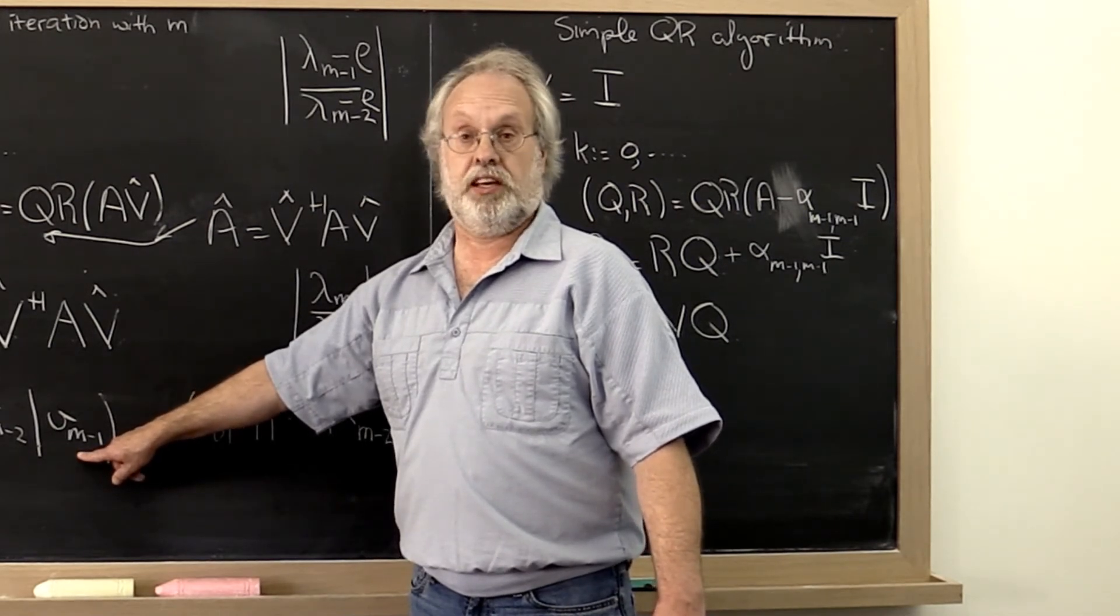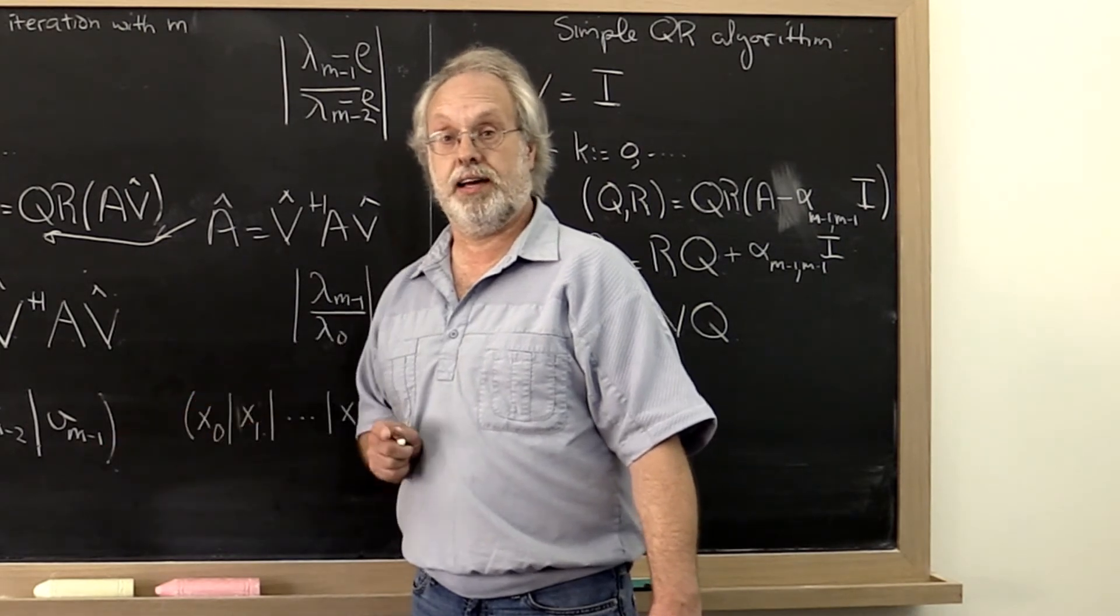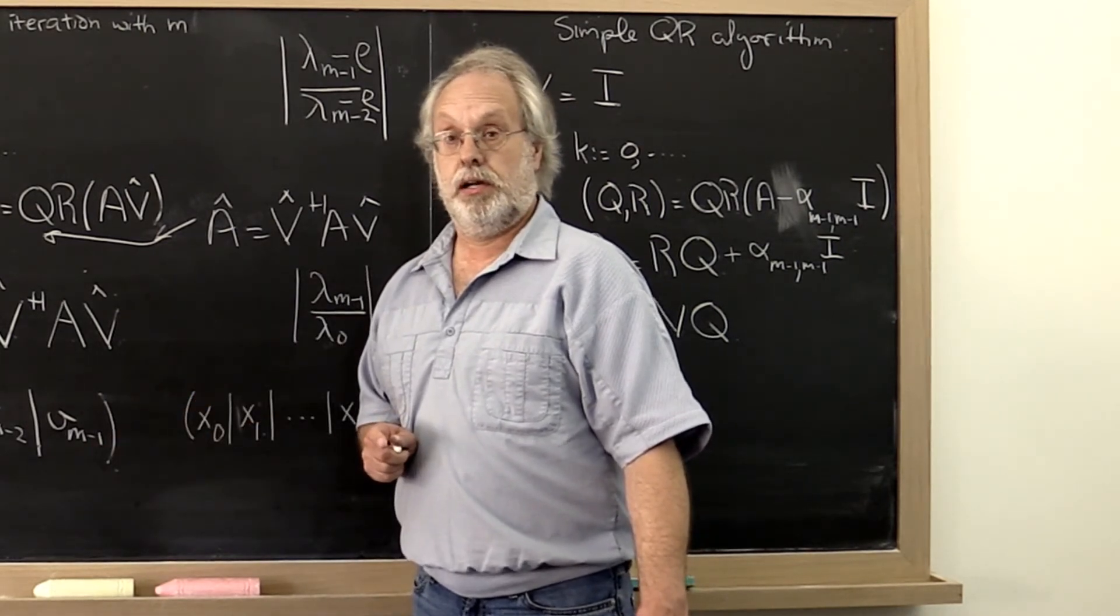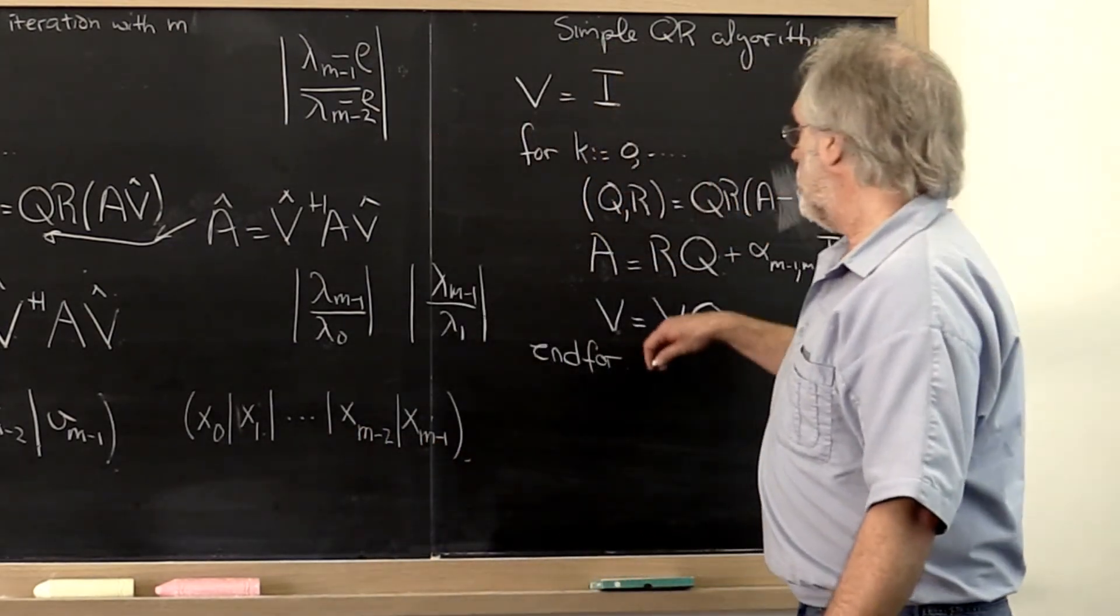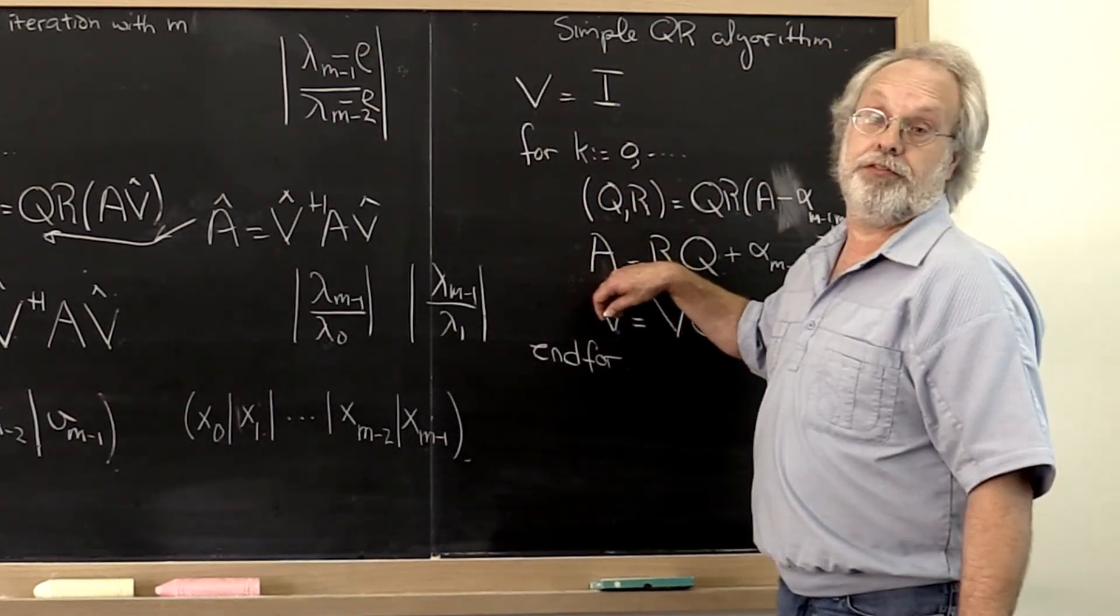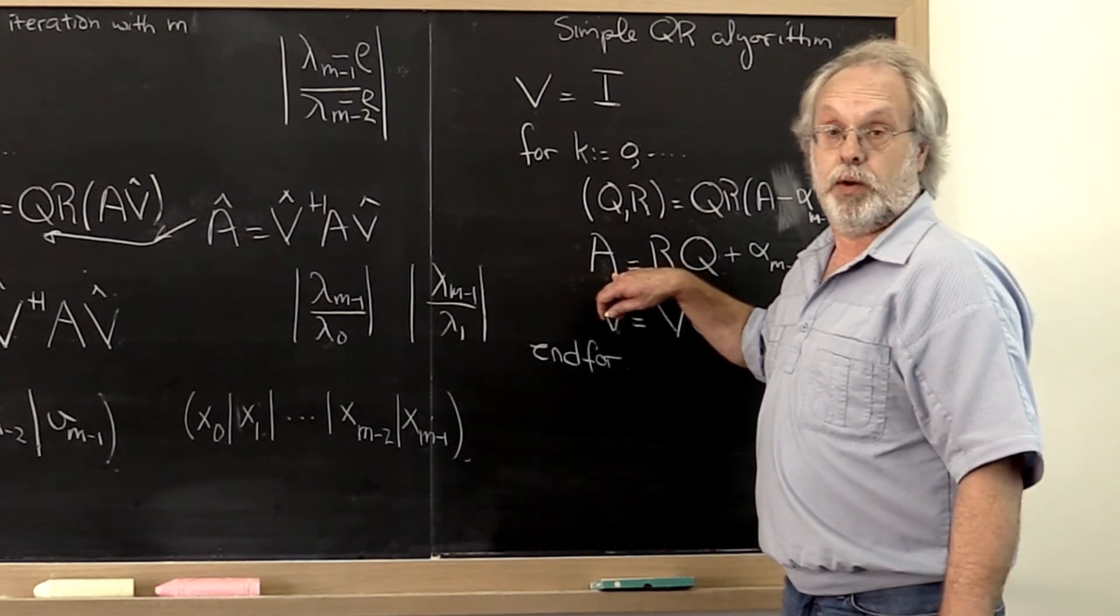We saw that when we looked carefully at the Rayleigh quotient iteration. That's how quickly we will get that eigenvector. And therefore we will at least find one of the eigenvalues and corresponding eigenvector very quickly.